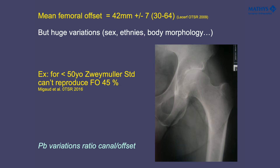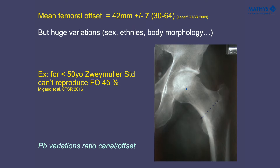In my institution, we use the Zweymüller standard stem for conventional cases. But for very young patients under 50 years old, the Zweymüller standard cannot reproduce femoral offset in more than 40% of cases. For a standard case there is no problem with a femoral offset of 40 millimeters, but in a case with a long neck and high offset — here the offset was 54 millimeters — it was impossible to reproduce with a standard Zweymüller stem.